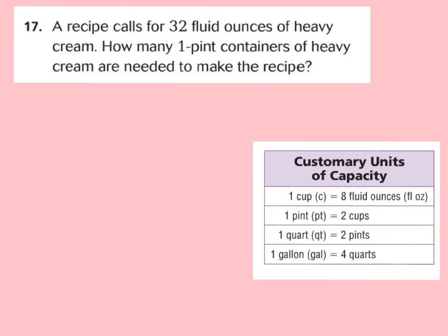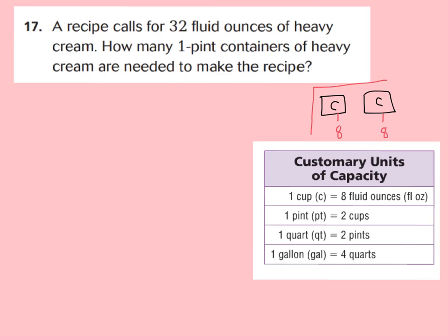For question number 17, a recipe calls for 32 fluid ounces of heavy cream. How many 1-pint containers of heavy cream are needed? We know 8 ounces equals 1 cup, and 2 cups equals 1 pint. Drawing the model: 1 cup plus 1 cup equals 2 cups, which equals 1 pint. With 8 ounces in each cup, there are 16 ounces in 1 pint.